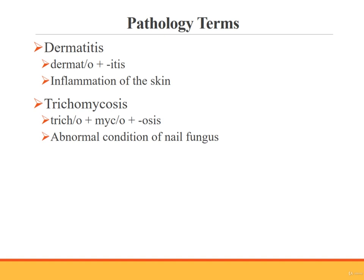Let's consider how some of the newly learned pathology terms are built. Dermatitis is inflammation of the skin — it's built from the combining form dermato, meaning skin, and the suffix itis, meaning inflammation. The combining vowel is dropped because the suffix begins with a vowel. Trichomycosis is an abnormal condition of hair fungus. The term has two roots and one suffix: the combining form tricho means hair, the combining form myco means fungus, and the suffix osis means abnormal condition. The combining vowel is used between the two word roots but is dropped between the second word root and the suffix, because the suffix already begins with a vowel.